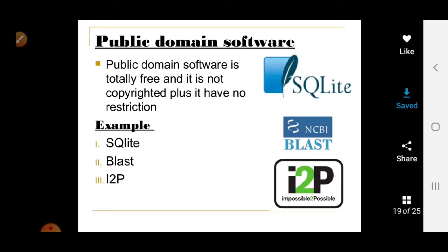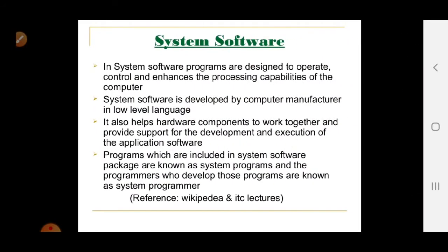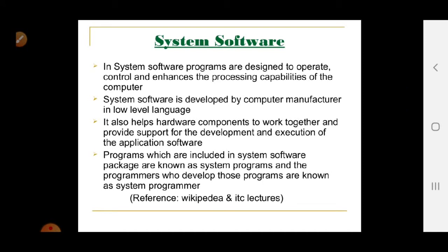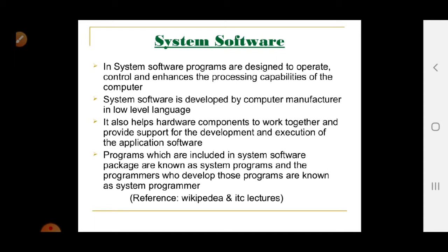In system software, programs are designed to operate, control, and enhance the processing capabilities of the computer. Without system software, a computer cannot work. System software is developed by computer manufacturers in low-level languages and helps hardware components work together. Programs included in a system software package are called system programs, and the people who develop them are called system programmers.